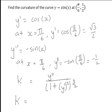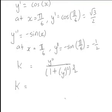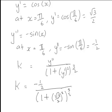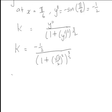The curvature k equals negative 1/2 divided by 1 plus y dashed — which is √3/2 — squared, and the denominator is all raised to the power of 3 on 2. We can simplify this a little bit.